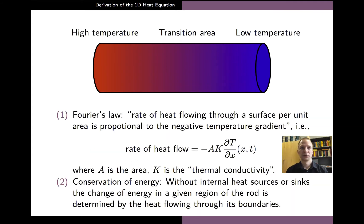In the derivation, we will mainly use two physical principles. The first one of these is Fourier's law, which tells us that the rate of heat flowing through a surface per unit area is proportional to the negative temperature gradient. And since this temperature gradient is given by the derivative of the temperature with respect to the spatial variable x, we arrive at the given formula where A is the area of the surface and K is the so-called thermal conductivity of the material.